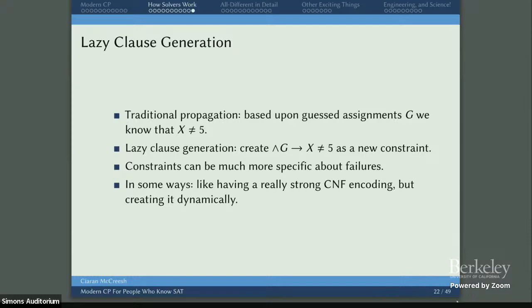Getting to the connection with SMT: in a traditional propagator, we've made some guesses G and now we know X is not equal to 5. One way of thinking about this is generating a clause that says if you do all of G then X cannot equal 5 — we add this as a new constraint. But you can be much more specific: these three very specific things mean X cannot equal 5. We call this lazy clause generation — you can have a really strong CNF encoding but create it dynamically when you need it.